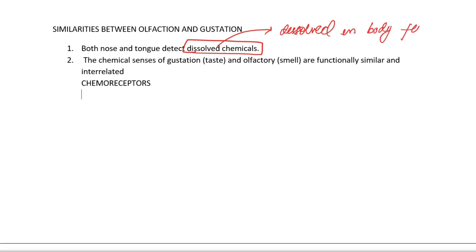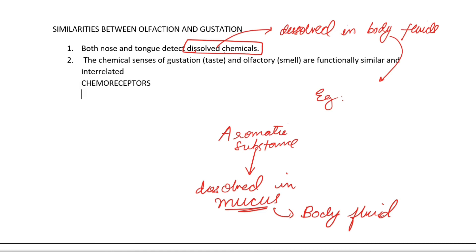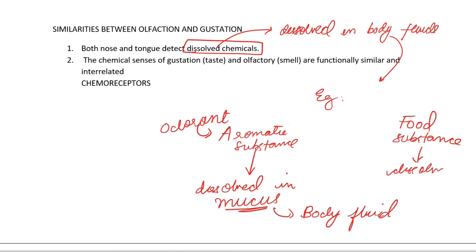What does 'dissolved' mean here? It means chemicals dissolved in body fluids. For example, the nose senses aromatic substances dissolved in mucus — mucus is a body fluid. The tongue detects the taste of food, where the chemical food substance is dissolved in saliva, and saliva is also a body fluid. So when we say 'dissolved chemicals,' the chemicals are dissolved in body fluids.